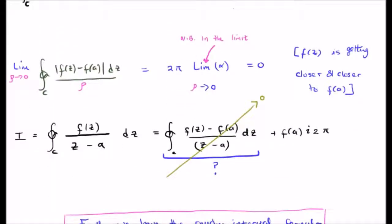What we're going to do now is shrink the contour radius rho down to zero and in doing so we'll see that the integral is going to go to zero, because the integral is always going to be less than twice pi times alpha but alpha depends on the radius. So basically the whole thing is going to shrink down to zero in the limit of course because f of z is getting closer and closer to f of a.